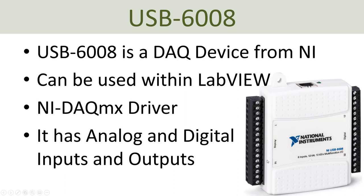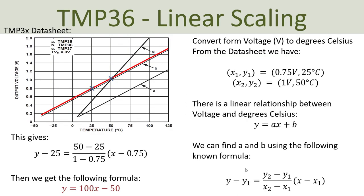Here you see an overview of this DAQ device — it has analog inputs and outputs, and we will use one of the analog inputs. Here you see a chart taken from the datasheet of the temperature sensor showing the relationship between voltage and temperature. We will use this TMP36 temperature sensor to find the temperature, but the output is a voltage signal, so we need to convert it to degrees Celsius.